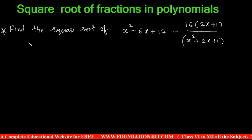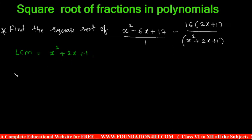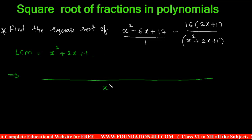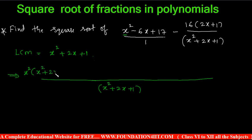For example, find the square root of: x squared minus 6x plus 17, minus 16 in the bracket (2x plus 1) as numerator, divided by denominator x squared plus 2x plus 1. In this question I need to find out the square root. This is completely one single polynomial; numerator and denominator will come, but this side is a fraction. First we need to find out the LCM. x squared minus 6x plus 17 is only the numerator part. We can assume it is 1 divided by 1, so we should find out the LCM first.